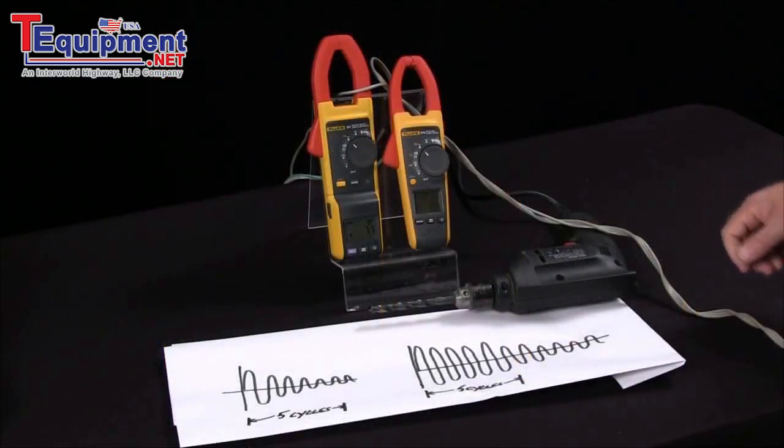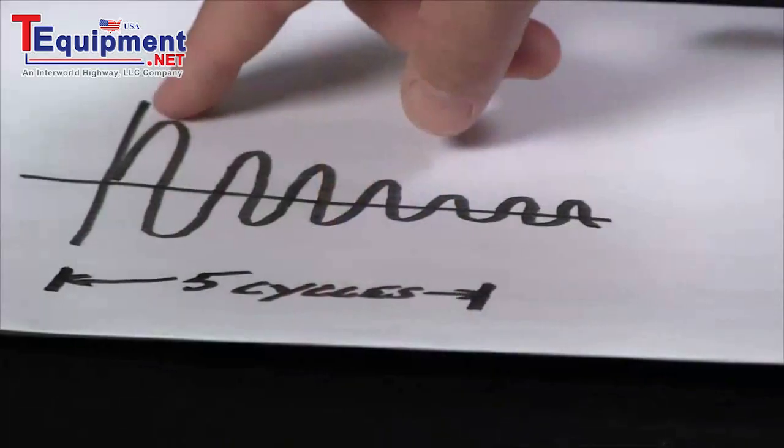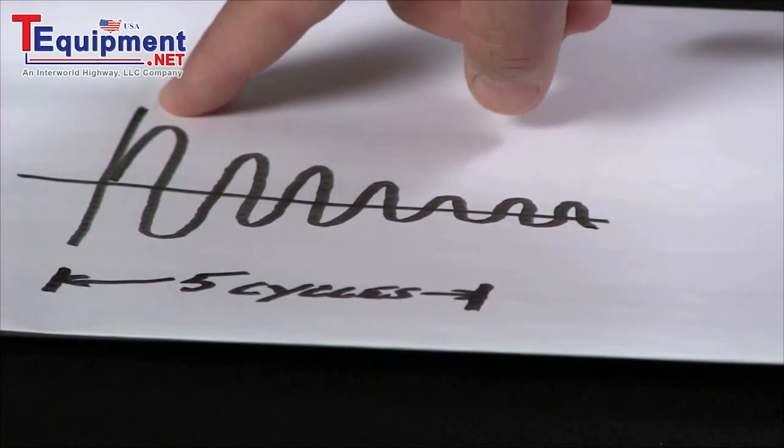One of the unique things about Fluke technology that we design is the starting current actually needs to be looked at the first five cycles.